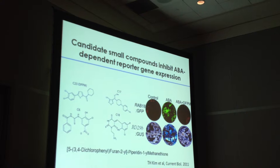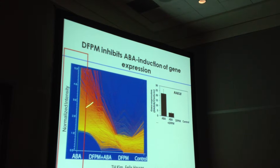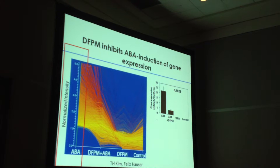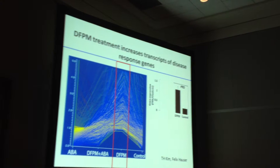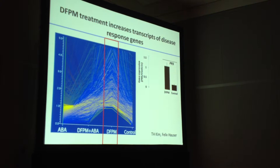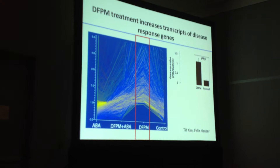On a genome scale, over 40% of ABA-induced genes are impaired in their expression by DFPM, whereas most of these genes are not much affected by DFPM itself. However, looking at another cluster of genes — initially surprising — DFPM alone induces a lot of genes. Felix Hauser and Tae-hoon Kim found that many pathogen-induced genes are induced by DFPM, leading to a larger search for understanding how DFPM inhibits ABA signaling.